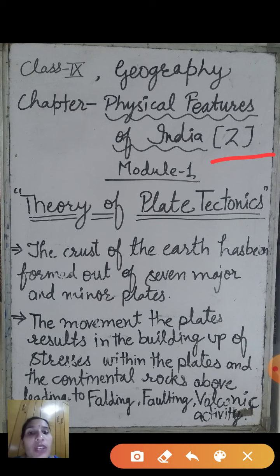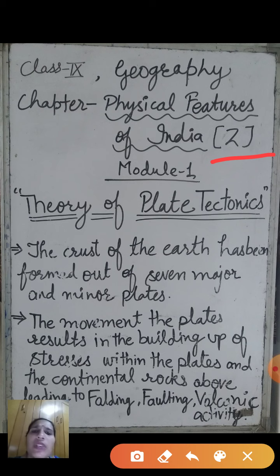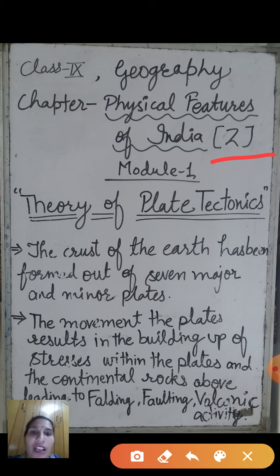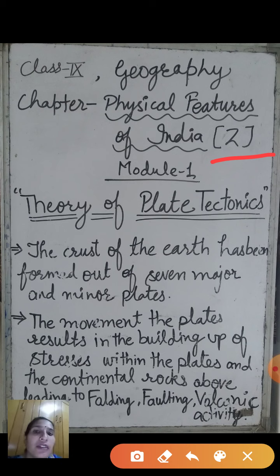In this chapter, Physical Features of India, we will discuss the different relief features of India — mountains, rivers, plateaus, plains, and desert areas. India is full of different relief features, so there is a great diversity of relief features. Now, the question is: how were these physical features formed, and how are they changing and transforming? There are several processes like weathering and erosion.